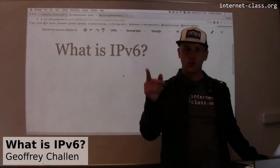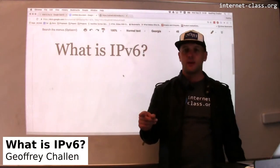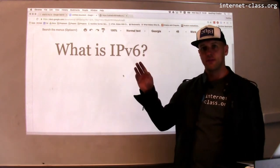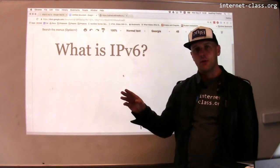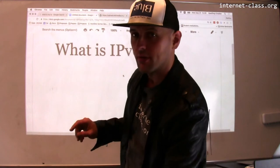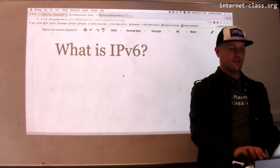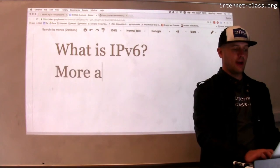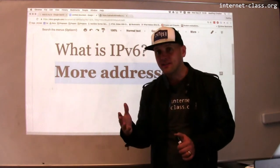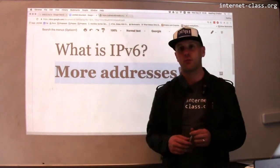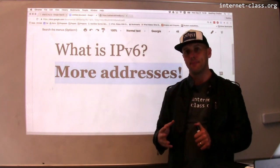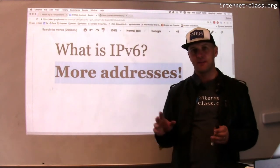One of the big changes to the internet that you are going to live through is the widespread deployment of the successor to IP version 4, known as IP version 6. IPv6 addresses many problems with IPv4, but probably the biggest problem it addresses is by adding more addresses. That's the big issue with IPv4 — it only has 4.4 billion addresses and those are not very well allocated, so the IPv6 address space is significantly bigger.